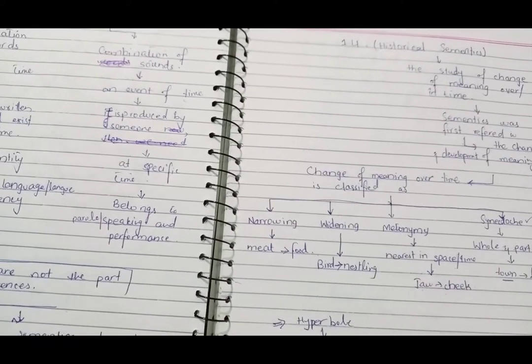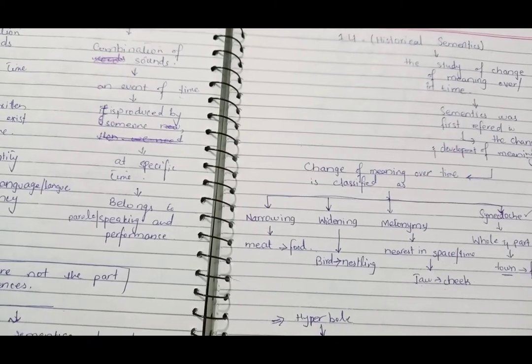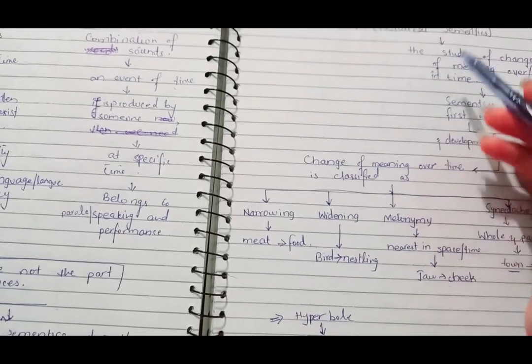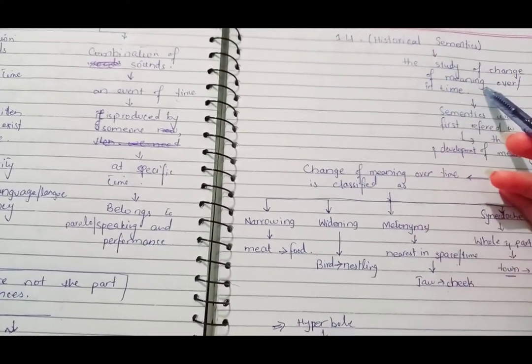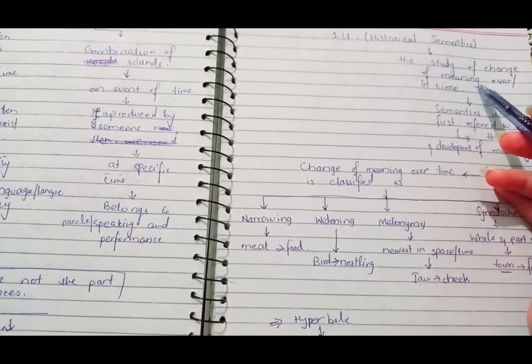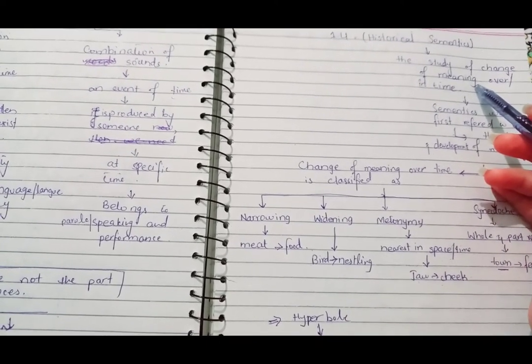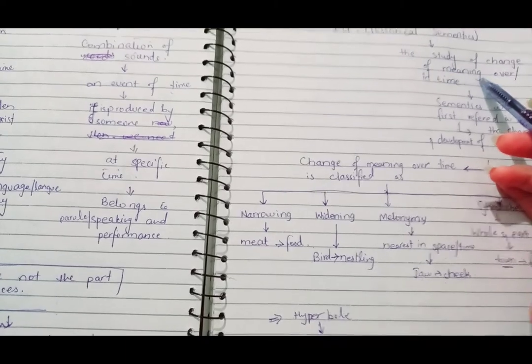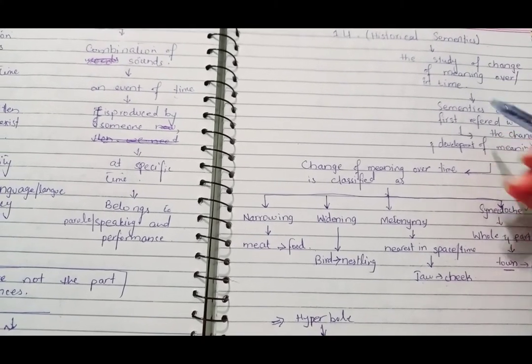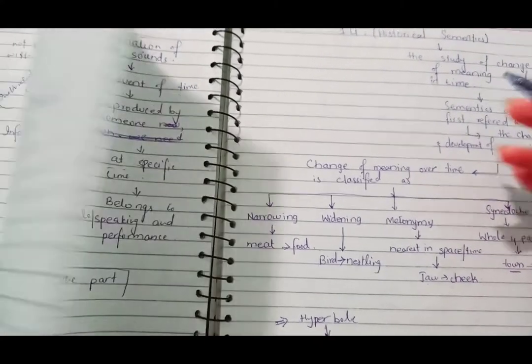Historical semantics, chapter number one, section 1.4. Historical semantics actually deals with the study of change of meaning over time. With the passage of time, how the meaning developed, how it evolved, and how all that stuff occurred is there in the historical semantics.